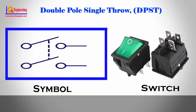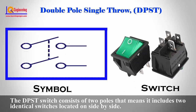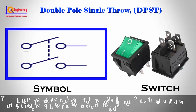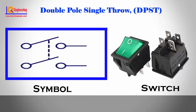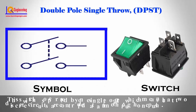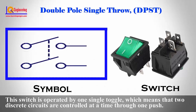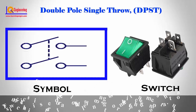DPST — Double pole single throw. The DPST switch consists of two poles, meaning it includes two identical switches located side by side. This switch is operated by one single toggle, which means two discrete circuits are controlled at a time through one push.